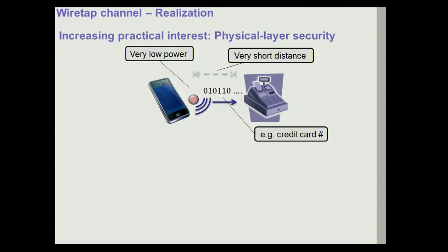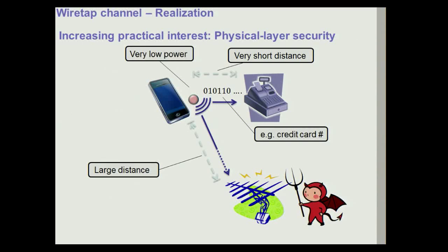Even though this is a very old problem, it has recently attracted a lot of interest from the practical corner. There is an entire community called physical layer security centered around this problem. For example, assume we have a mobile phone and want to use it to make a payment to a cash register — sending a credit card number privately. By holding the phone very close to the register and using very low communication power, we can ensure that any wiretapper is sufficiently far away and receives a degraded signal. If we have a scheme for the wiretap channel model, we could communicate privately without the need to establish cryptographic keys, which would be a great advantage.